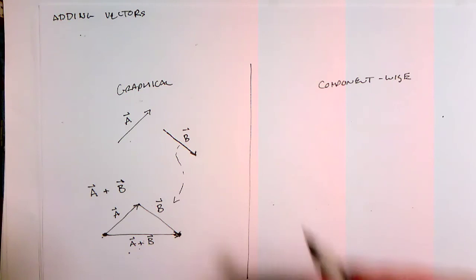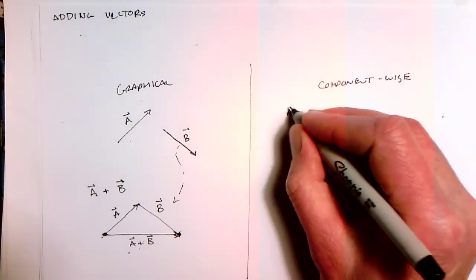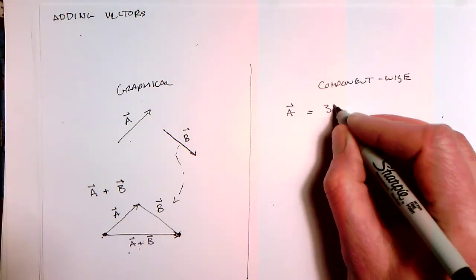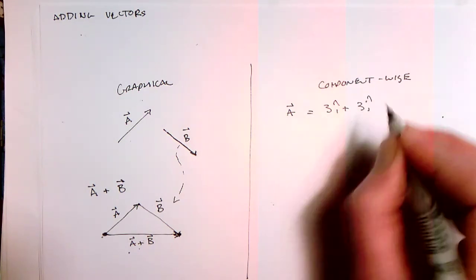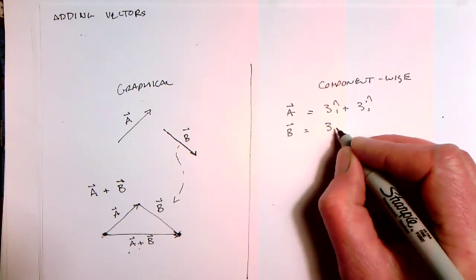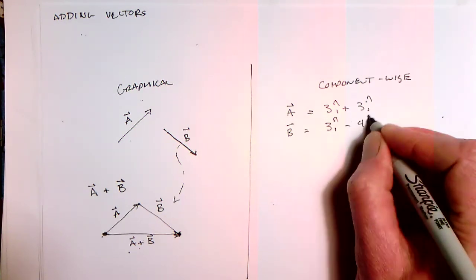Component-wise, it's a fairly simple thing to add vectors as well. So if we said, let's say we're in a two-dimensional coordinate system, let's say A is three times i hat plus three times j hat and B is three times i hat minus four times j hat.